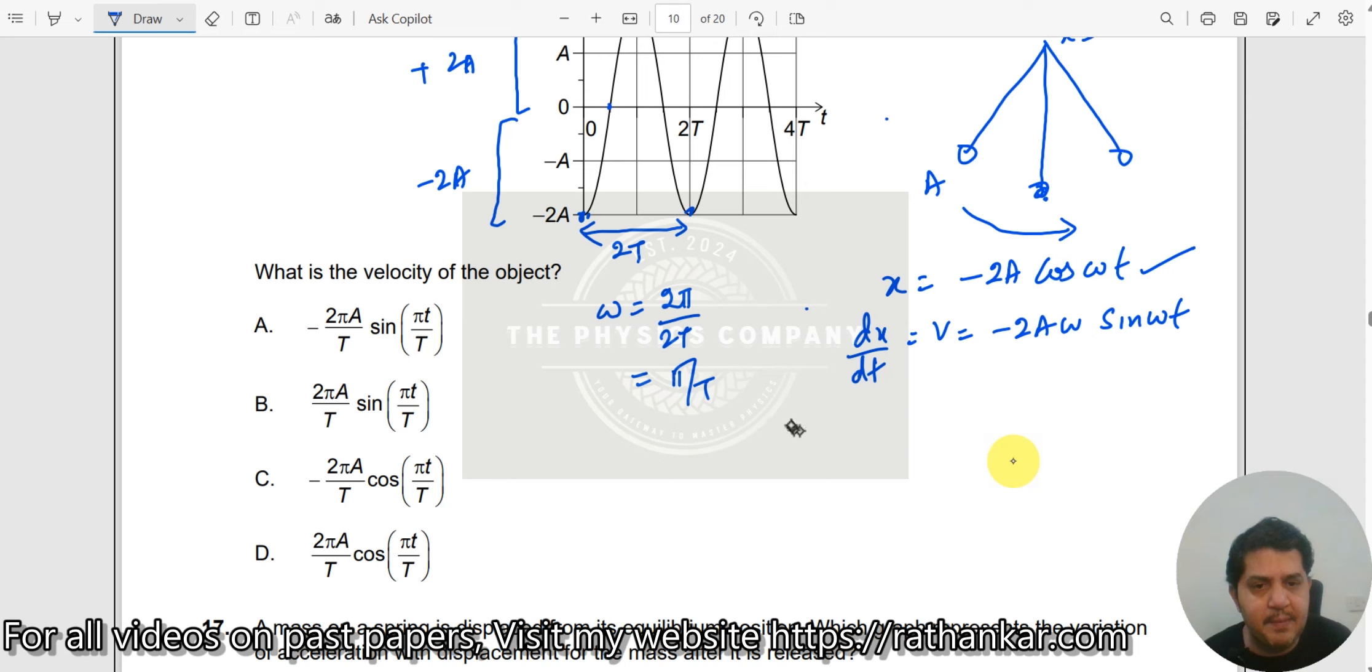So therefore, now we are going to substitute all of them here and write v is equal to minus 2a into pi by t into sin of pi t divided by capital T. So which is the right answer here? Minus 2 pi a divided by t into sin of pi t by t. Answer is e.